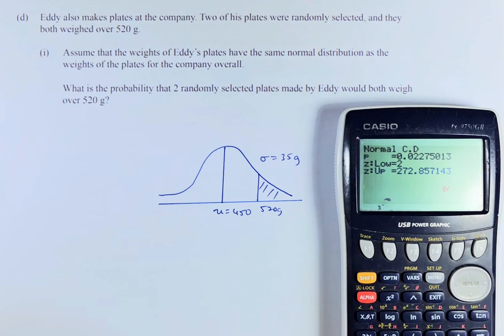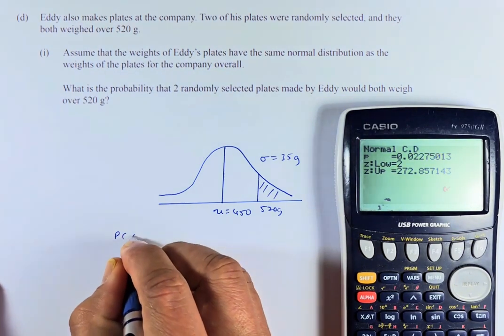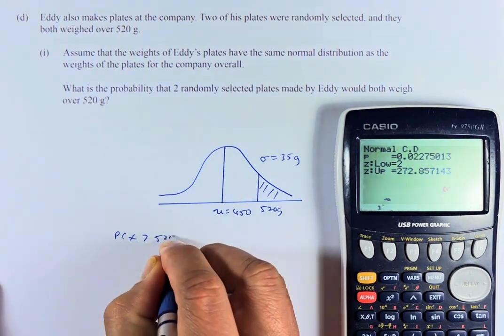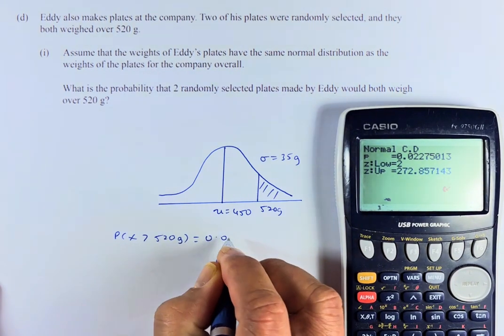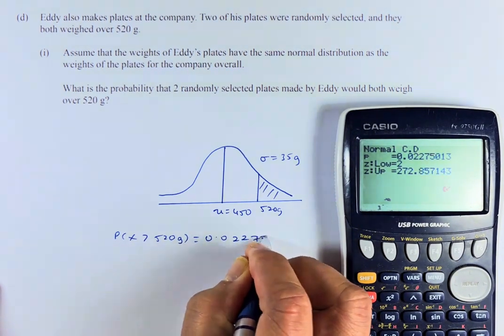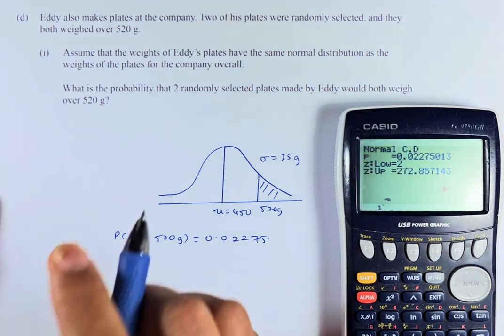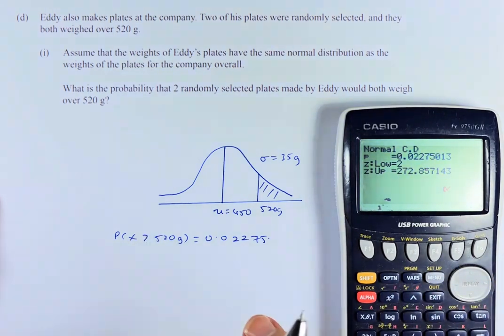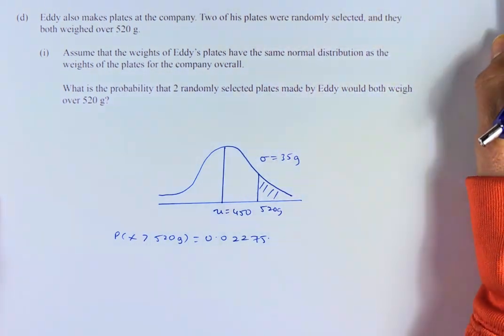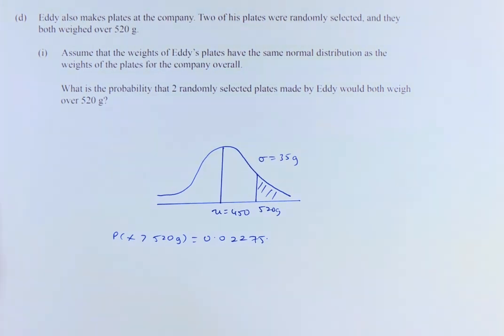And the answer is going to be, so probability of x greater than 520 grams is equal to 0.02275. So the question asks you, what is the probability? So we're going to take the calculator away.